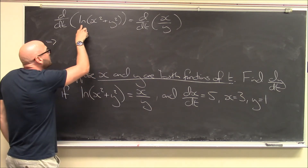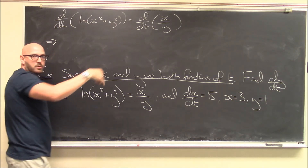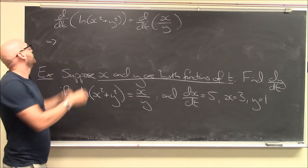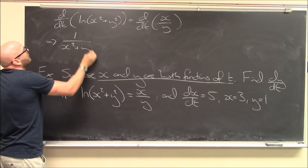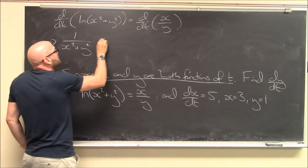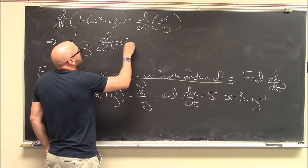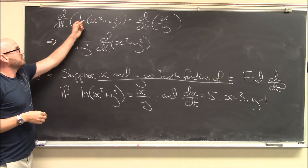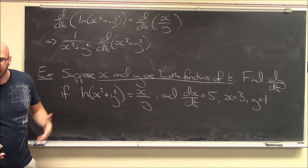We have the derivative of both sides with respect to t. On the left, I've got log of a giant function of t — it's a function of x and y, but x and y are both functions of t. So it's log of a function of t. The chain rule says this becomes 1 over the inside, times the derivative of the inside with respect to t. That's the special case of the chain rule — the derivative of log of a function is 1 over the inside times the derivative of the inside.